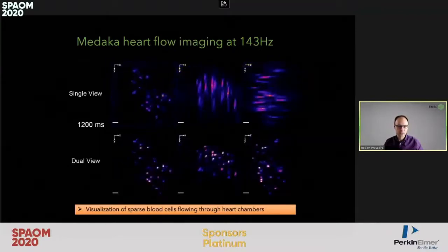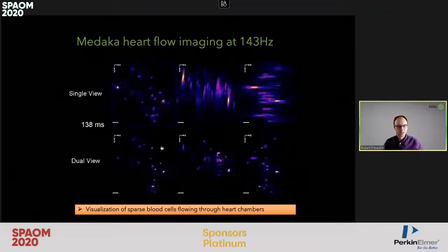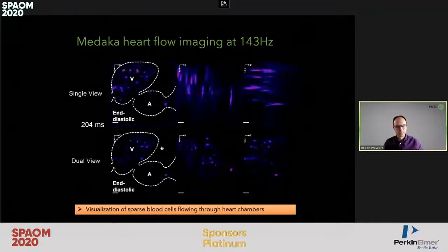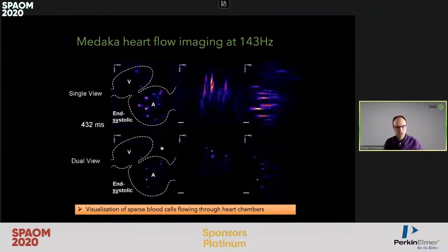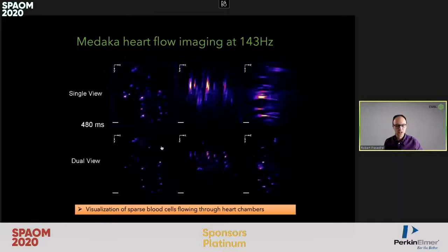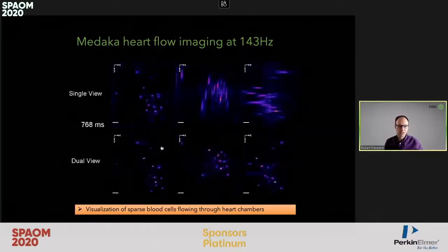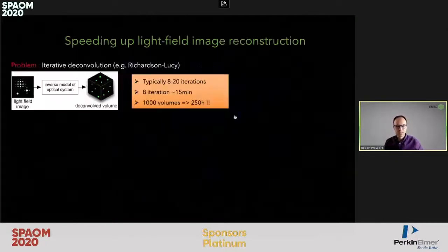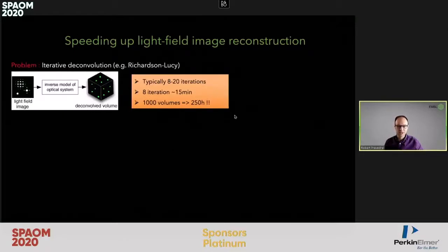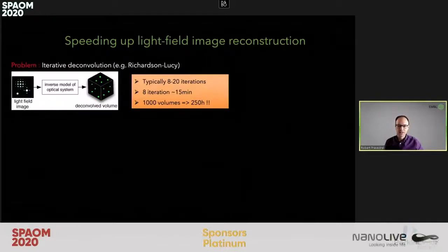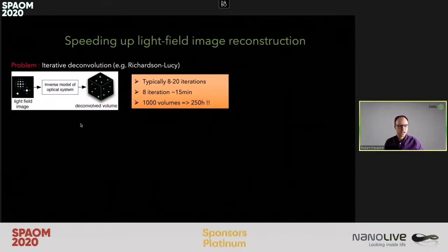Our imaging method made a real difference here. We improved resolution and pushed the volume rate to even higher levels. But there are always bottlenecks in every microscopy approach. In light field microscopy, in particular in this deconvolution approach, the bottleneck is the iterative and fairly long deconvolution. In our case, using a Richardson-Lucy deconvolution approach, this normally takes more than 15 minutes for a single volume to reconstruct.